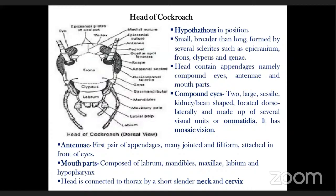The cockroach has two large compound eyes. Each ommatidium forms its own separate image, and the cockroach views the collective image of all ommatidia together. This type of vision is called mosaic vision.